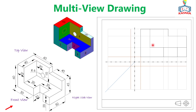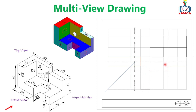For the top view, the horizontal width is projected directly from the front view — no need to measure it again. Only the depth needs to be measured. To construct the inverted L-shape: the overall depth is 50mm and the given dimension is 40mm, so 50 minus 40 equals 10mm. Measure 10mm and project a horizontal line. Since the width is 20mm, you can connect it directly from the front view to complete this shape.